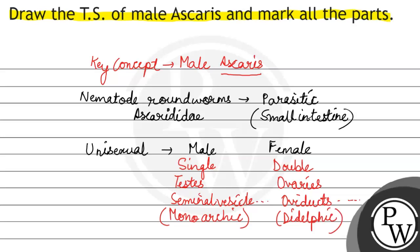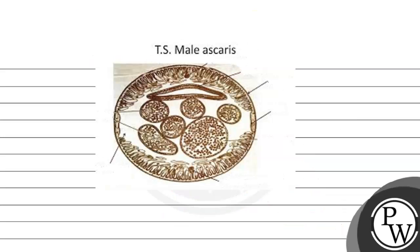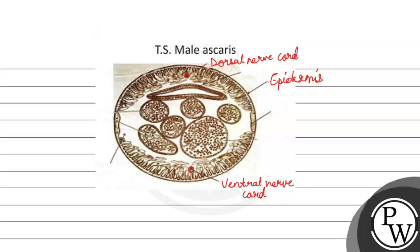अब हम समझते हैं about the male Ascaris through a diagram. So, this is TS of male Ascaris. Male Ascaris में present होते हैं two nerve cords: first होता है dorsal nerve cord, and secondly होता है ventral nerve cord. Male Ascaris की जो outer layer होती है, वो होती है epidermis. And इसमें एक line present होती है जिसको हम बोलते हैं lateral line.